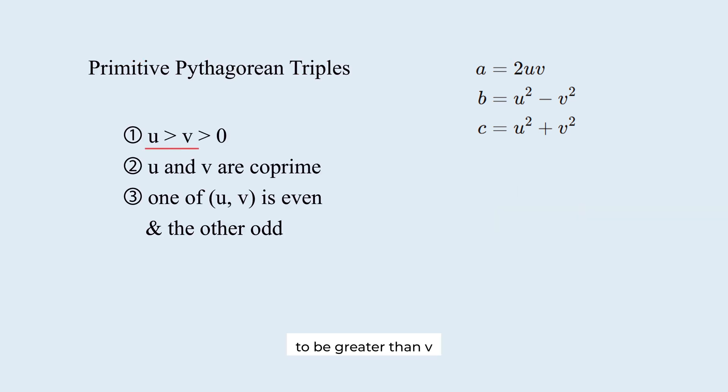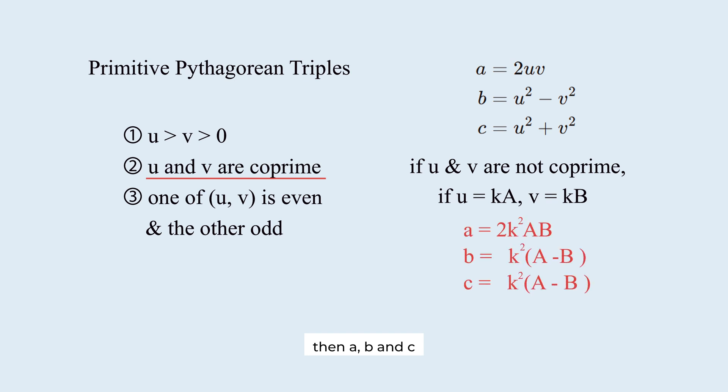We require u to be greater than v so that b is positive. We also need u and v to be coprime so that a, b, and c share no common factor. If they are not coprime, that is, if they share a factor k, then a, b, and c will also share k.